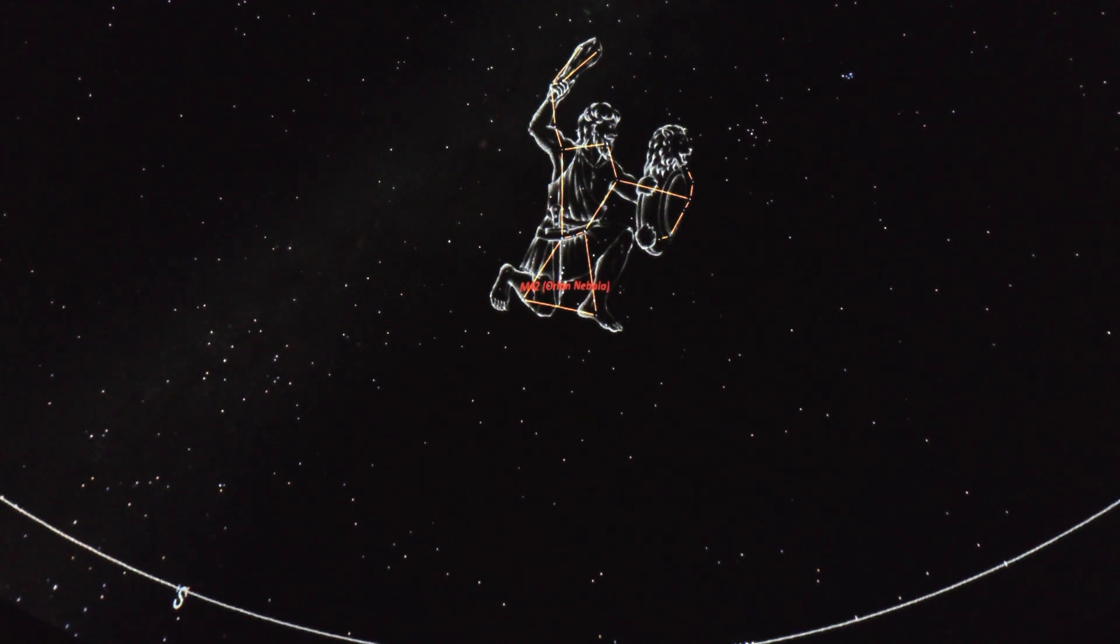Now to find M42, we start by looking in the middle of this constellation at Orion's belt. This string of three stars right here. Very easy object to find in the sky. From there we simply go down until we find this vertical trio of stars resting beneath the belt. This is known as Orion's sword. The nebula is actually that middle star right here. It just looks like a star to the naked eye because we're so far away from it.